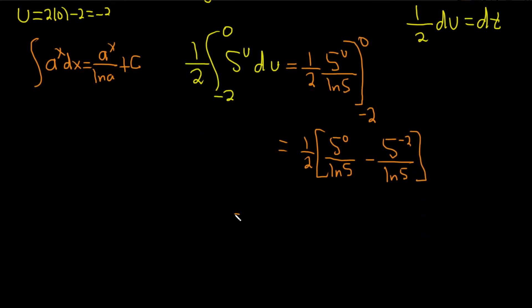So this is equal to 1 half. 5 to the 0 is 1. So we get 1 over the natural log of 5 minus. And 5 to the negative 2 is really 1 over 5 squared, which is really 1 over 25. So we can write it like this. 1 over 25 ln of 5.